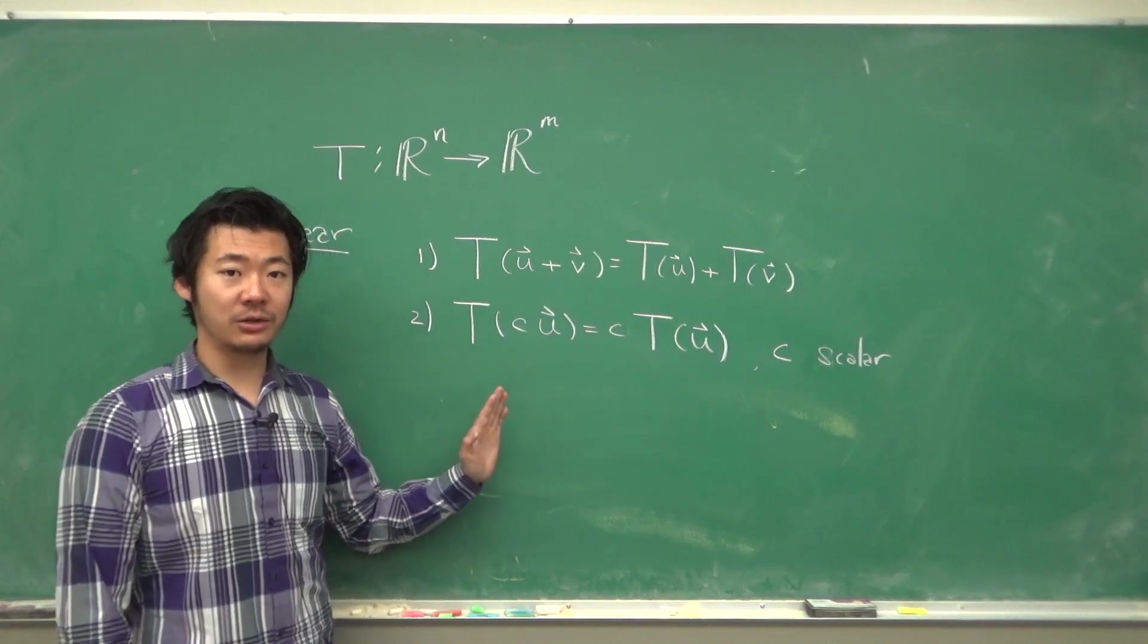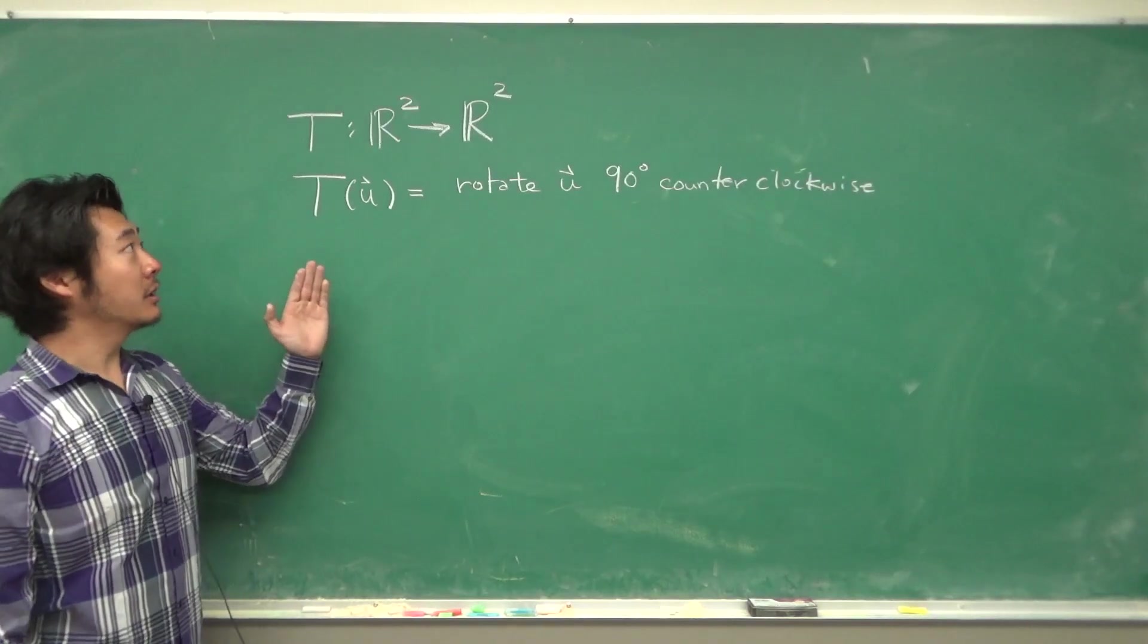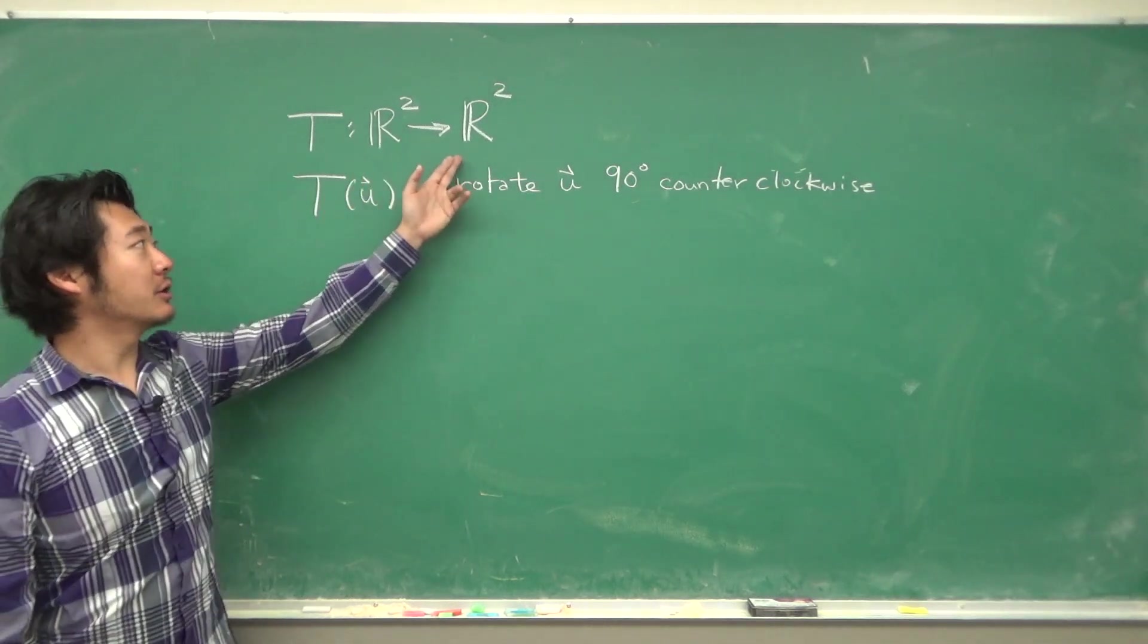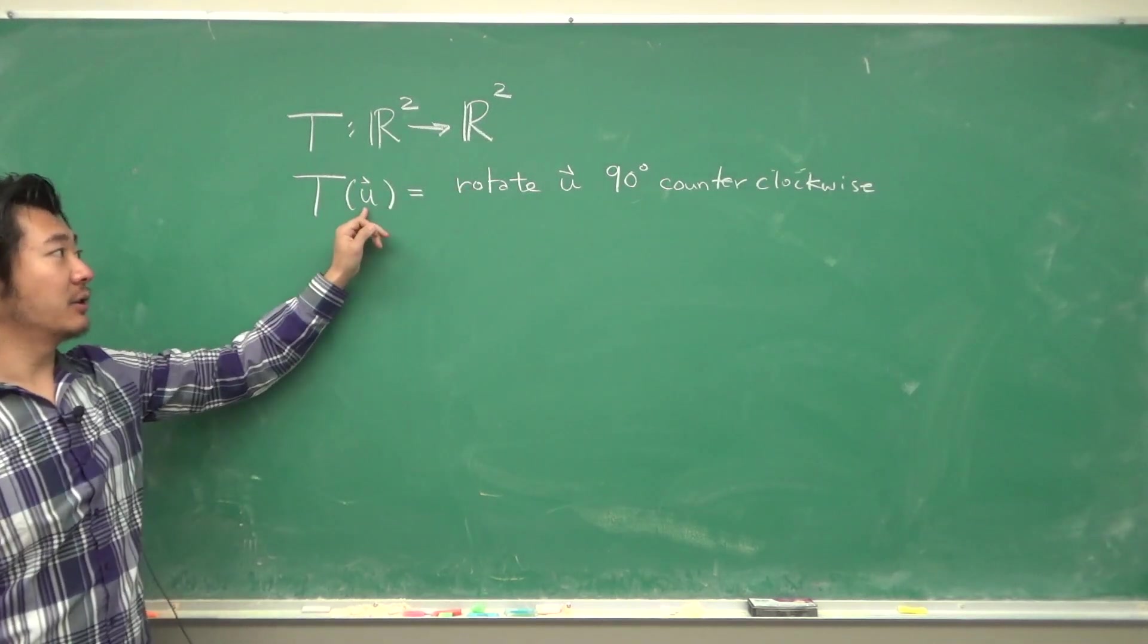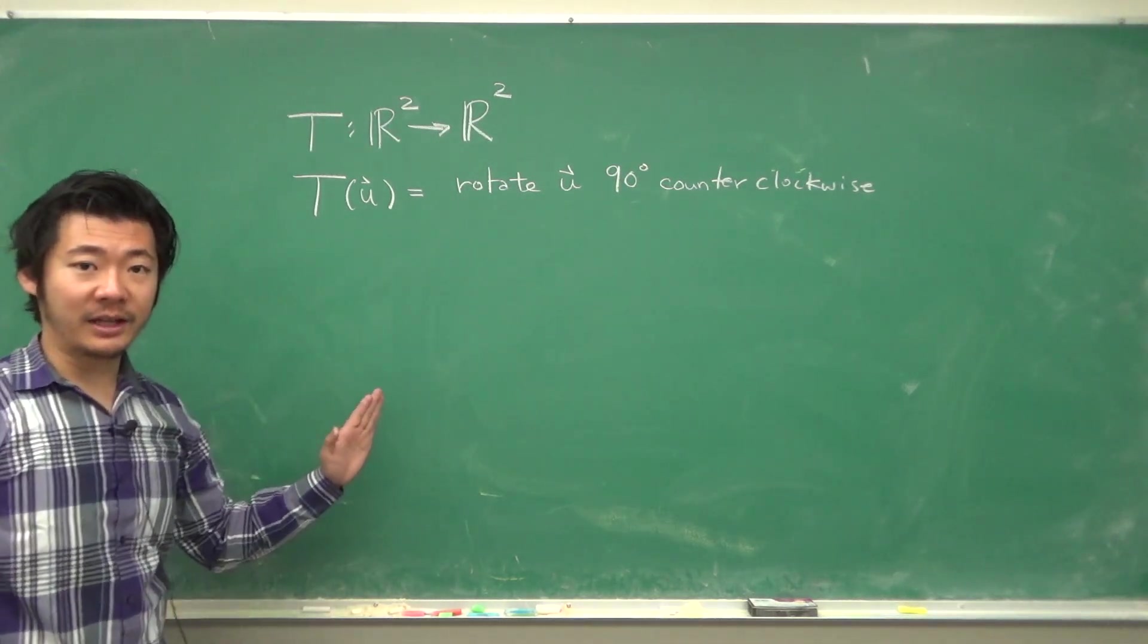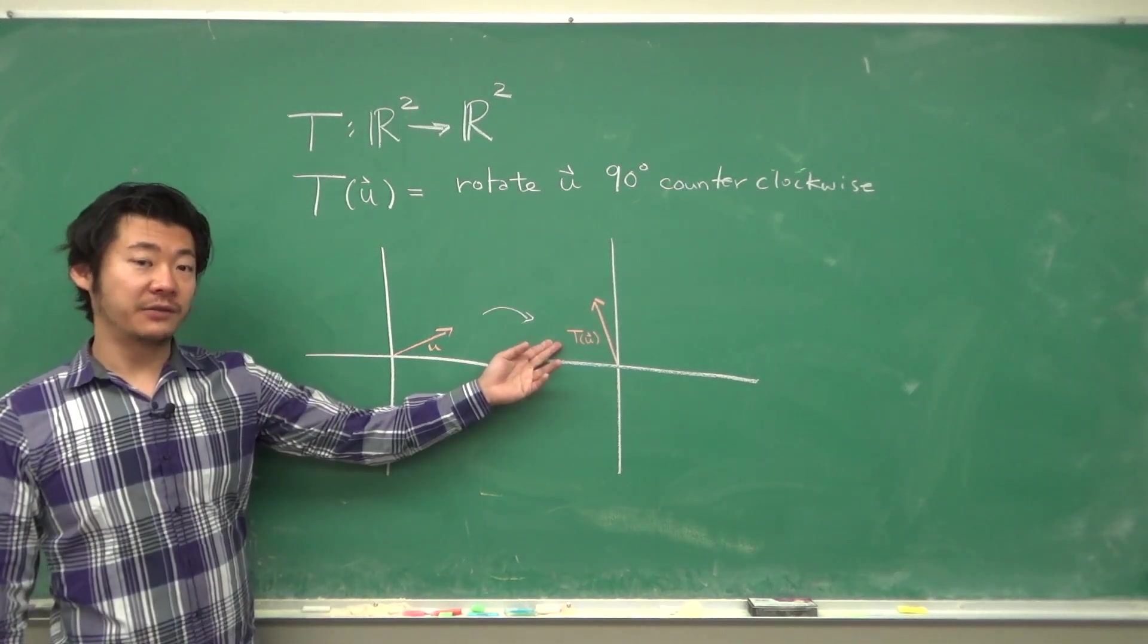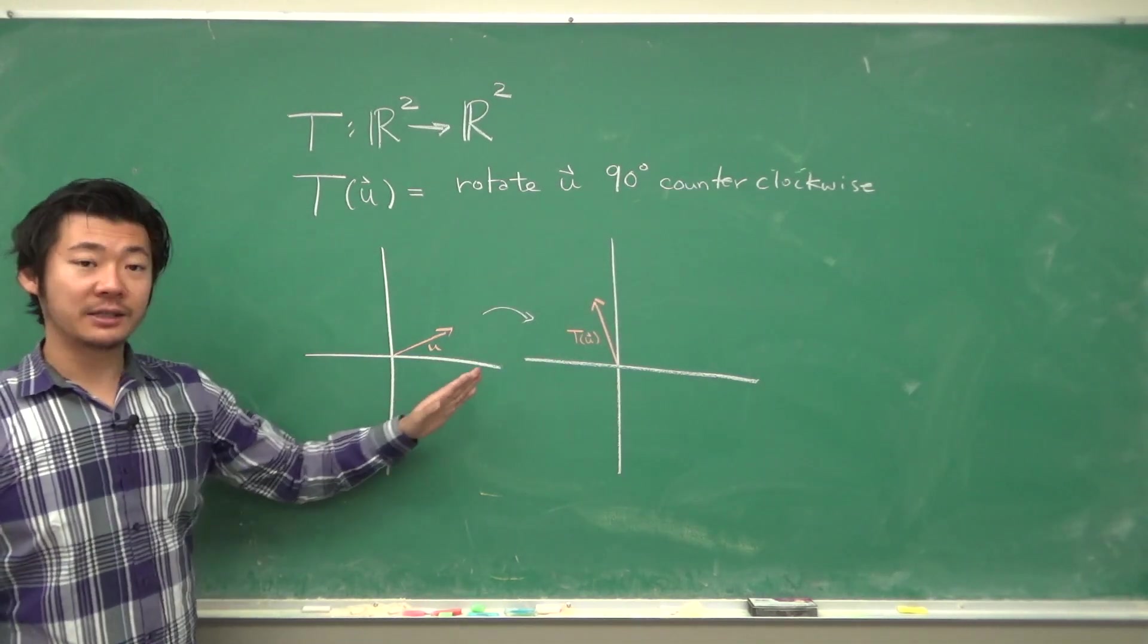So an example of a linear transformation is something like this following transformation from R² to R² where we take a vector u and we rotate it 90 degrees counterclockwise. So visually it would look something like this. It takes a vector u to this vector T(u) rotated 90 degrees counterclockwise.